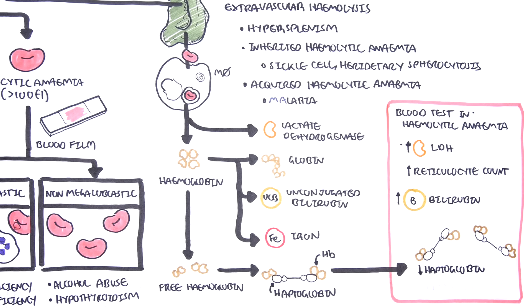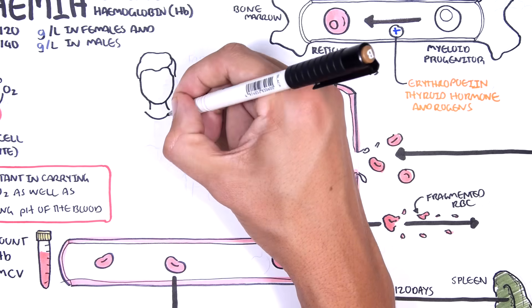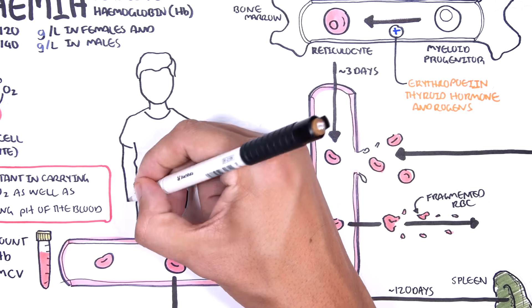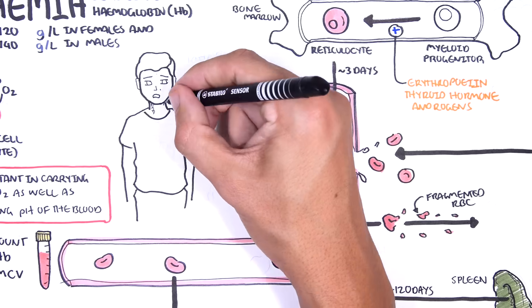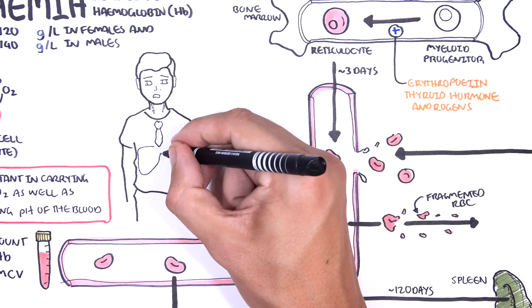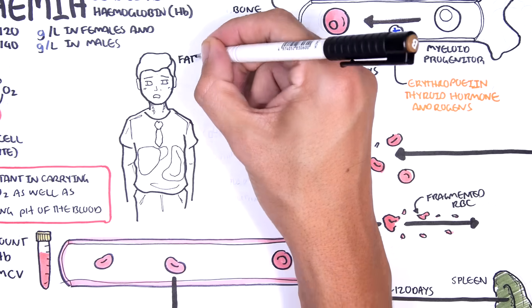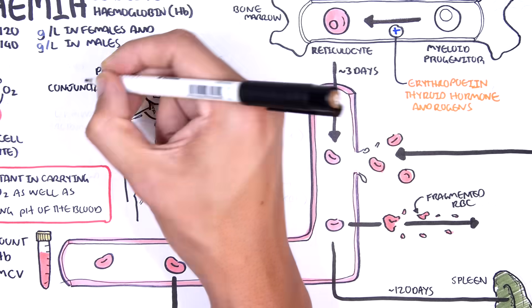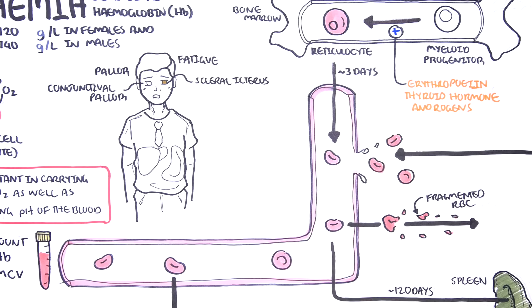Red blood cells as mentioned are very important in carrying oxygen to the body, providing energy for the cells. Therefore with low amounts of red blood cells you can have signs of fatigue and low energy. A person with anemia can therefore present with pallor, conjunctival pallor, fatigue, and scleral icterus if you are thinking hemolysis.